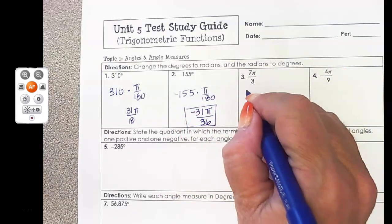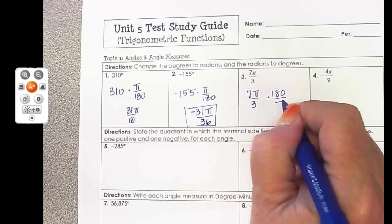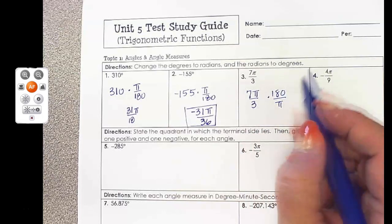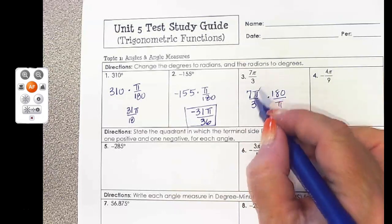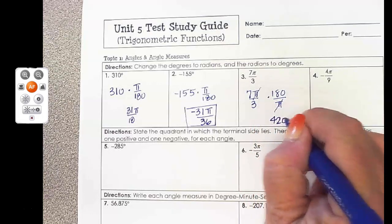Now to go from radians to degrees, you're going to multiply by 180 over π. Reduce the fractions, and your π's will cancel out.